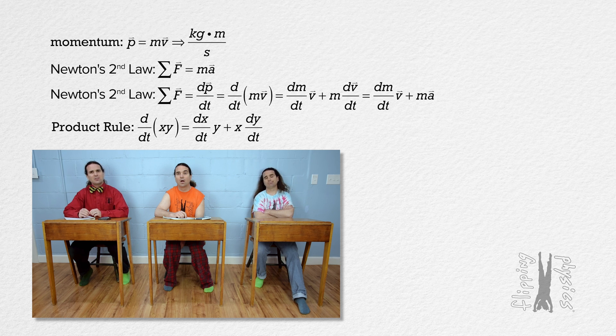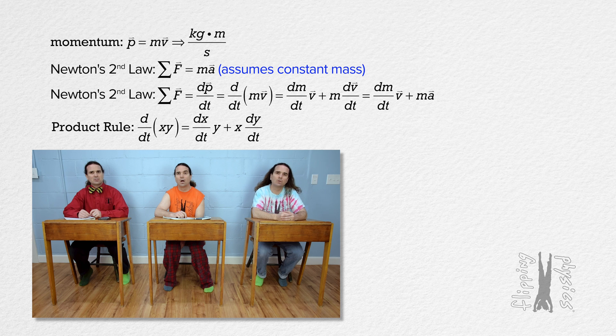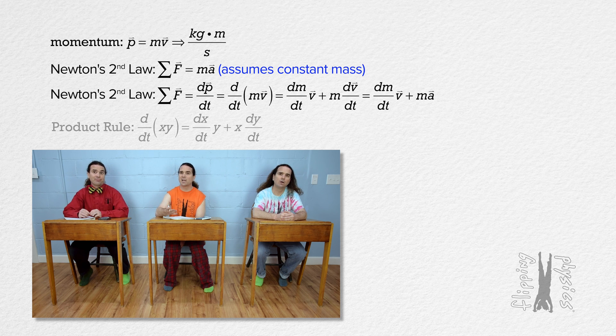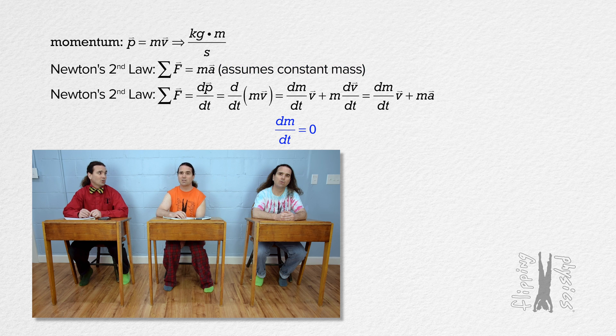That means the version of Newton's second law we have been using until now assumes the mass of the object or system does not change as a function of time. Right. It assumes the derivative of mass with respect to time equals zero.